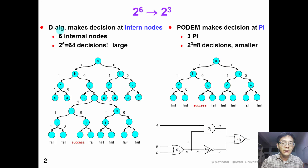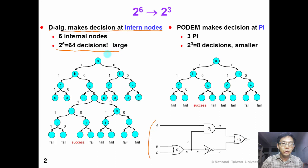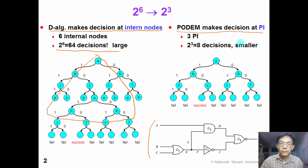If you find that the algorithm is very difficult to understand, please don't be frustrated. The algorithm is indeed very difficult because it makes decisions at internal nodes. For this small example circuit which has six internal nodes, we have 2 to the power of 6, equal to 64 decisions to make. This is a huge decision tree. However, PODEM proposed to make decisions only at primary input. For this circuit, it has only three primary inputs, so the decision tree has only 2 to the power of 3, equal to 8 decisions. This is a much smaller decision tree, and therefore PODEM is faster than the D algorithm.